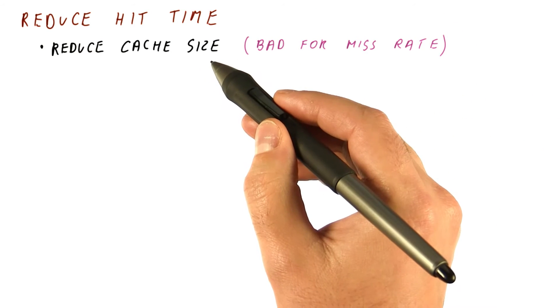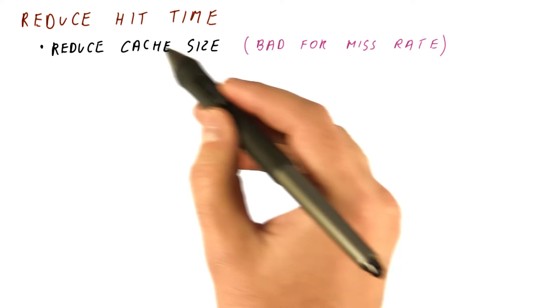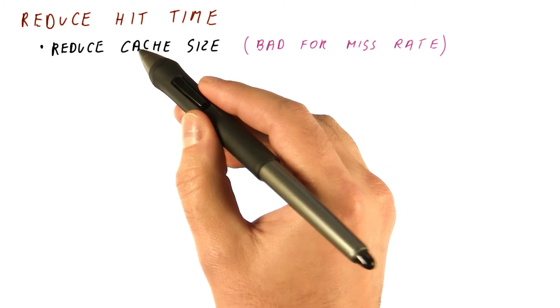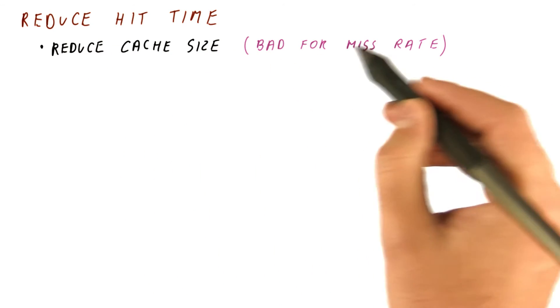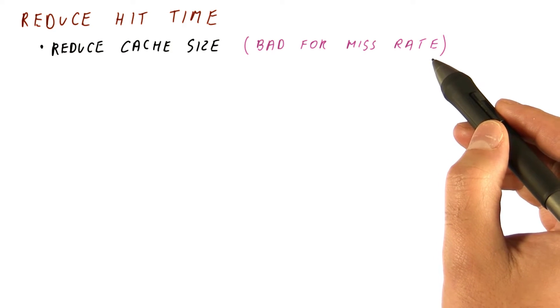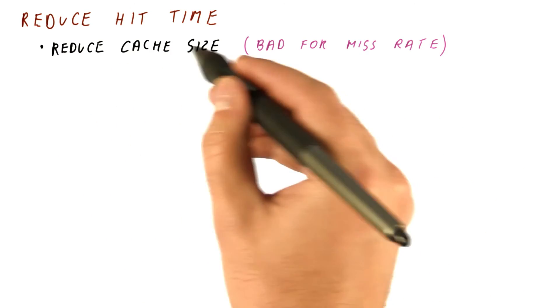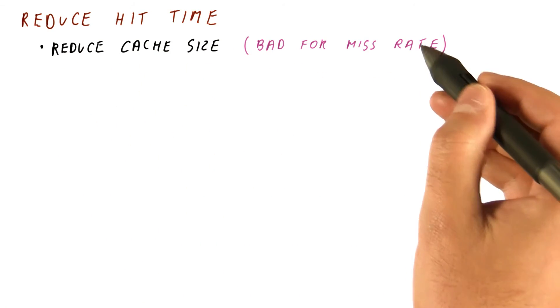But this is bad for the miss rate. The overall AMAT might not actually be improved because we are going to improve the hit time but increase the miss rate, and thus pay more of those miss penalties that are quite large. We can do this, but we have to do it carefully to balance the miss rate and the hit time.